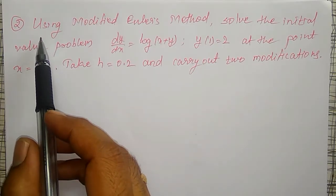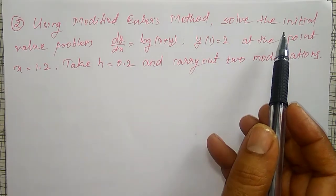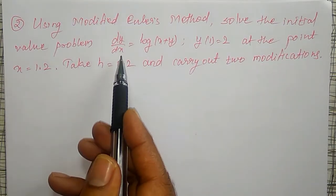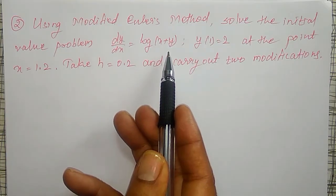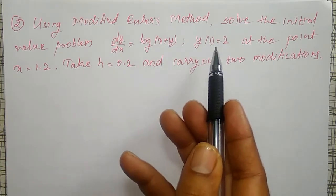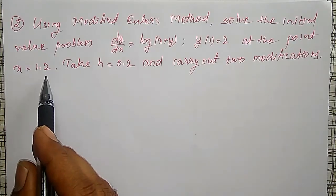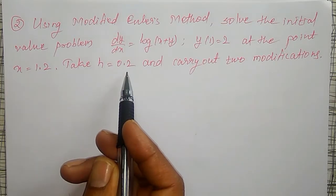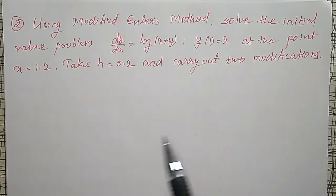An example using the modified Euler method: solve the initial value problem dy/dx equal to log of x plus y, y(1) equal to 2, at the point x equal to 1.2. Take h equal to 0.2 and carry out two modifications.